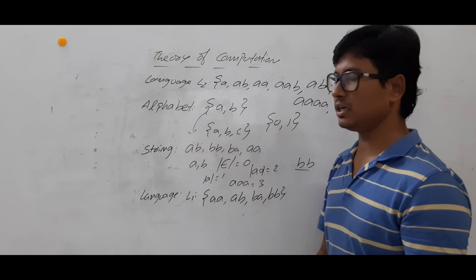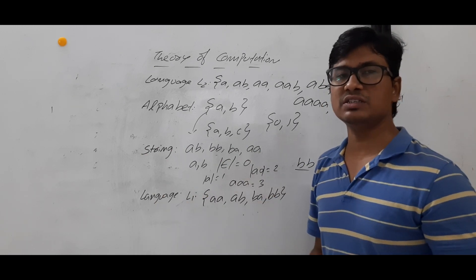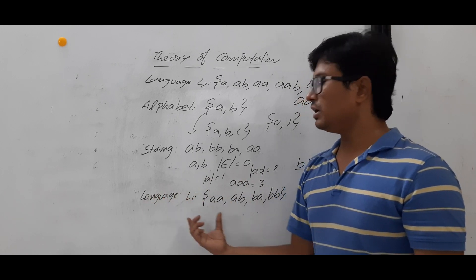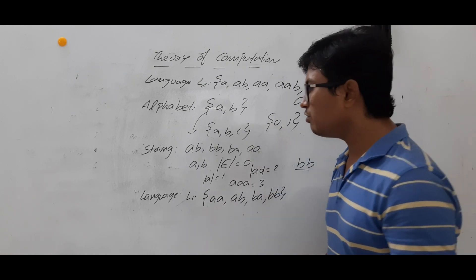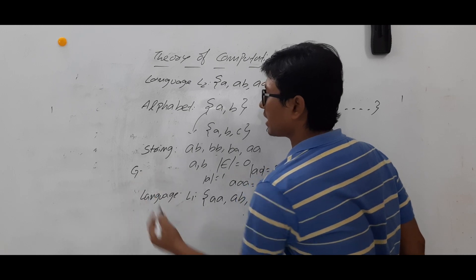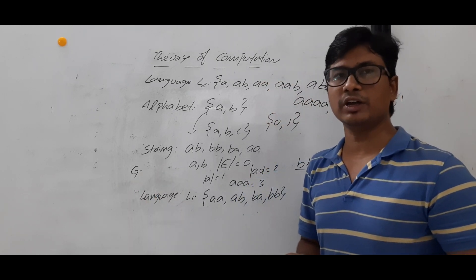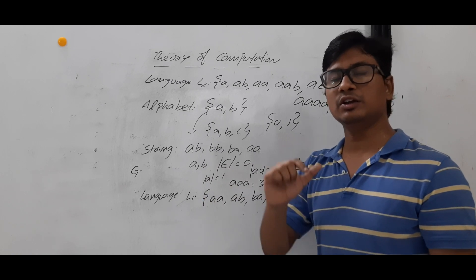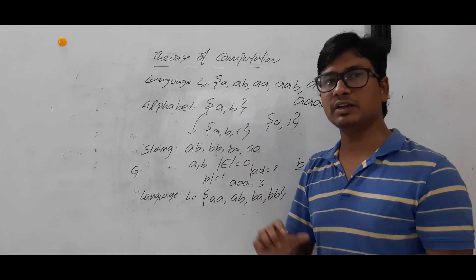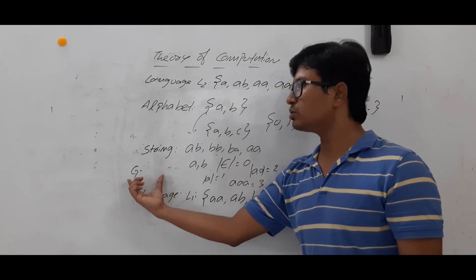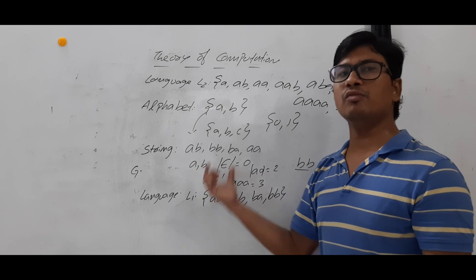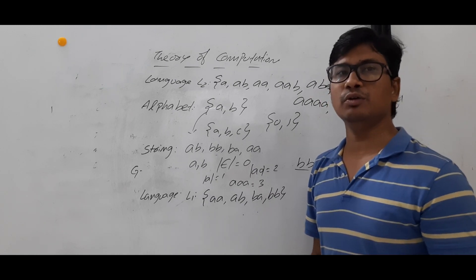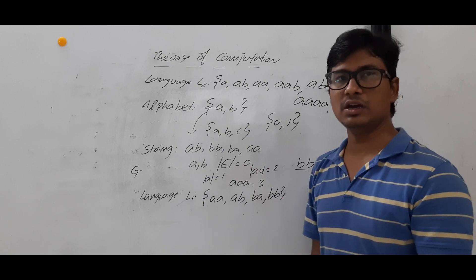So I hope you have understood what is an alphabet, what is a string, what is a language, what is a finite language, what is an infinite language, and why we study mathematical models. Remember, usually problems will not give you a language directly — they will give you a grammar. A grammar consists of four things: variables (non-terminals), terminals, a set of productions, and a start symbol. Using that grammar you generate the language, and from the language you construct the mathematical model. In the next video we will discuss more about finite automata. Thank you so much.